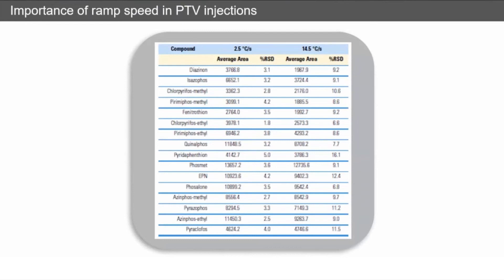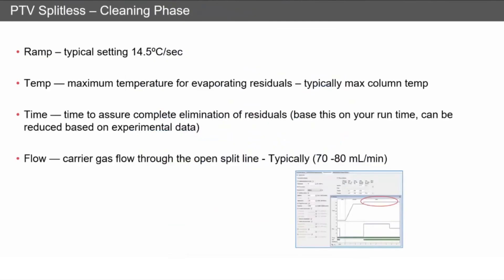Always keep this ramp speed down on the splitless injection. Finally, there's a cleaning phase. This is something you don't have in a split/splitless inlet. We can ramp that inlet temperature up to clean it and get rid of any high boilers. We don't care about the speed at which it heats up, so we typically go with our highest settings, around 14.5 degrees per second, and we want to go to the maximum temperature to get rid of residuals, typically the maximum column temperature.